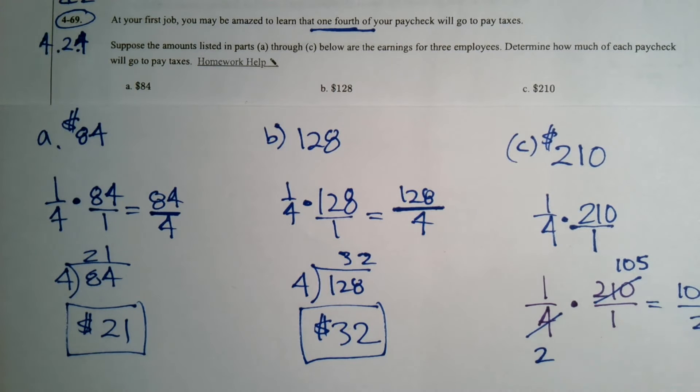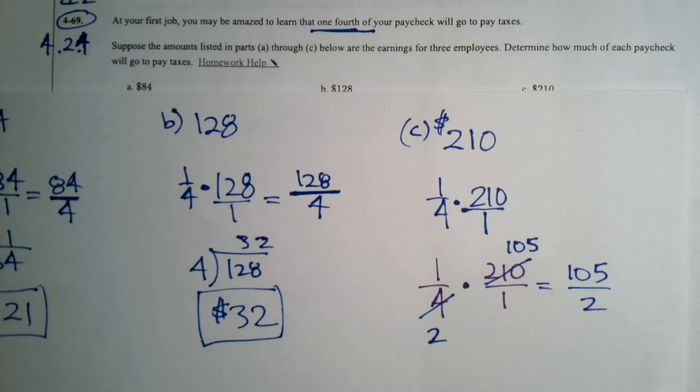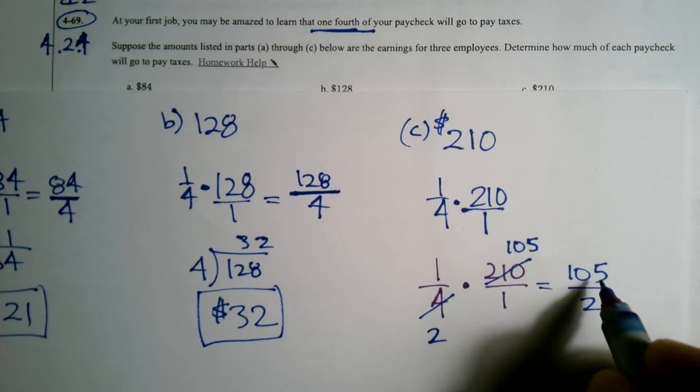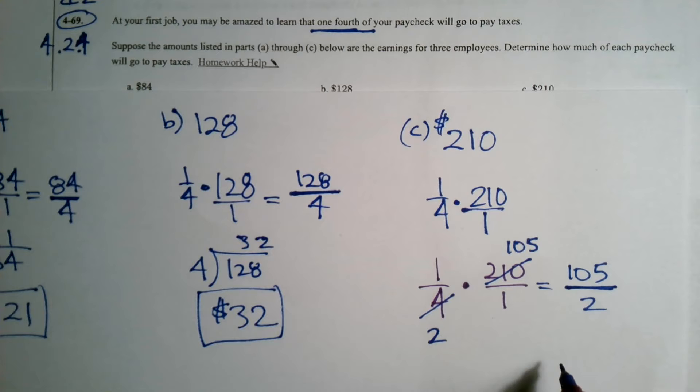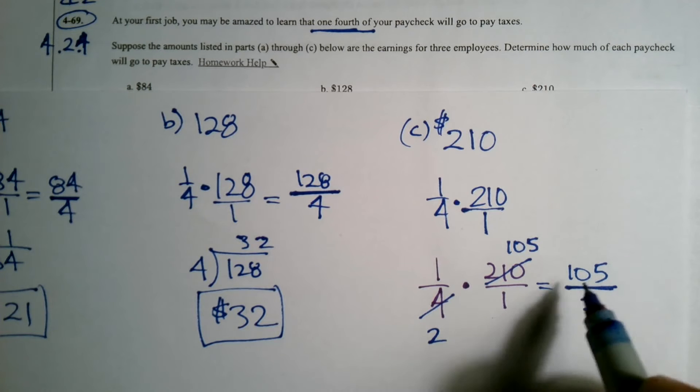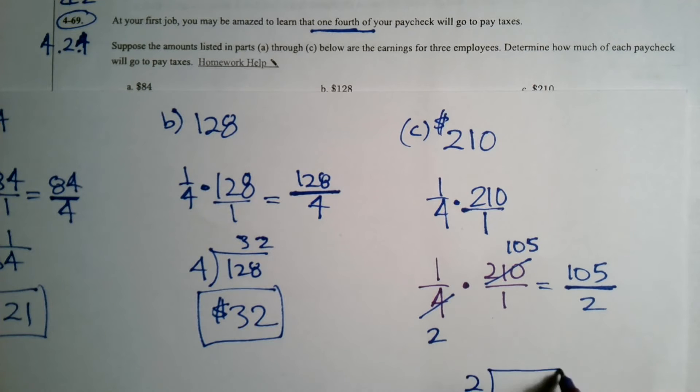So it simplifies before I actually do the multiplication. Now if I'm looking at this again, I do still need to divide to get my number as money. That doesn't simplify as a fraction any further, but it will divide. So I can go two into 105.